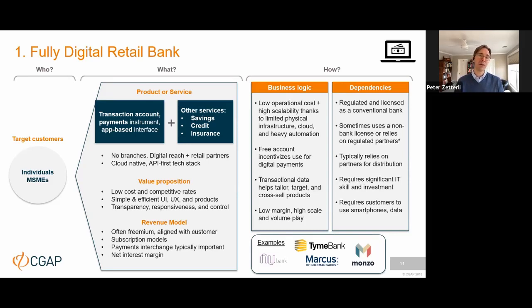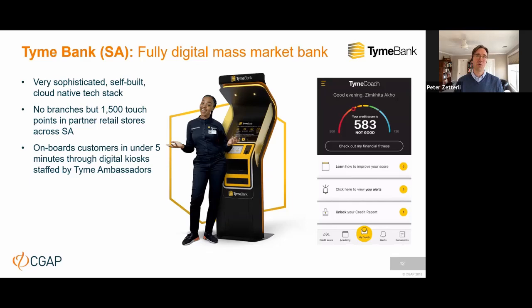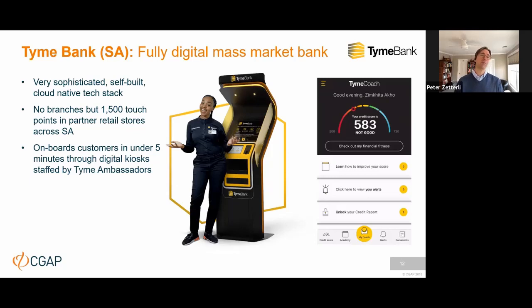To give you a clearer sense of what this might look like in an emerging market context, I wanted to share the example of TymeBank in South Africa. TymeBank launched in January 2019 — that was their big public launch. They have a very sophisticated cloud-based tech stack that they built themselves. They have no branches but they have 1,500 touch points all across South Africa in partner retail stores like Pick n Pay and Boxer. They also have the TymeBank kiosk, which they designed and built themselves — assembled and manufactured in South Africa — staffed by TymeBank ambassadors who give customers help and information.